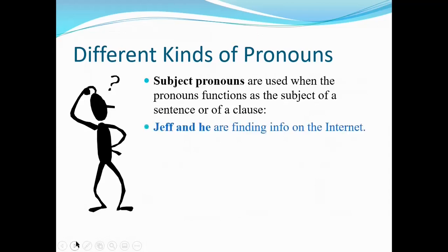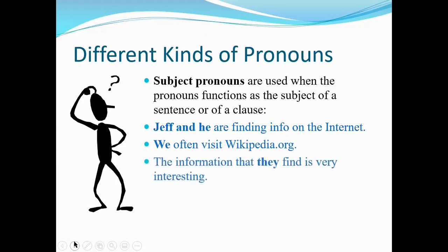For example: 'Jeff and he are finding info on the internet.' In regular usage you'd say 'Jeff and him,' but you wouldn't say 'him is finding info on the internet,' would you? So since 'he' is here, even though it's coupled with Jeff, it would still be a subject pronoun. 'We often visit wikipedia.org' and 'the information that they find is very interesting' — those are all subject pronouns.